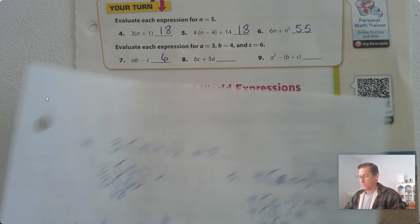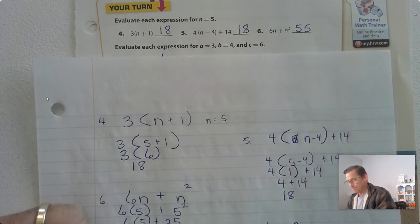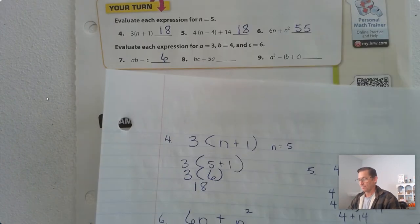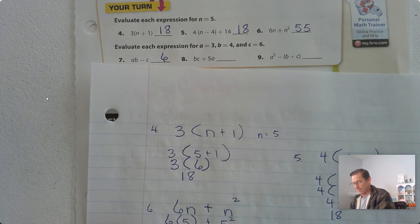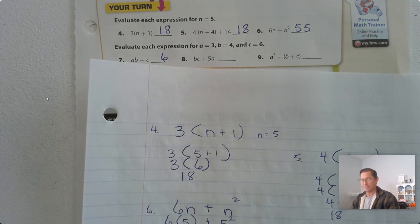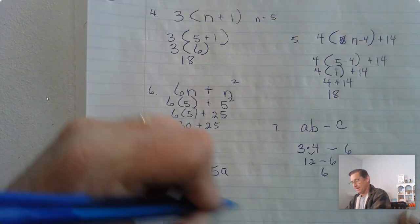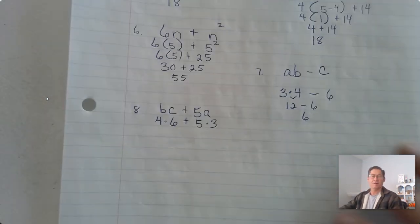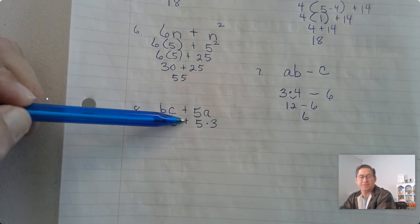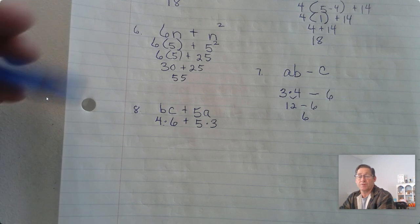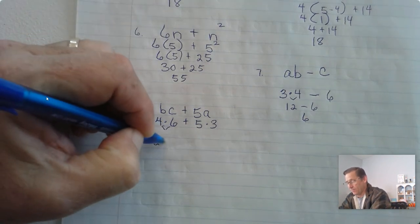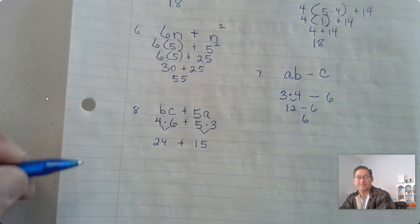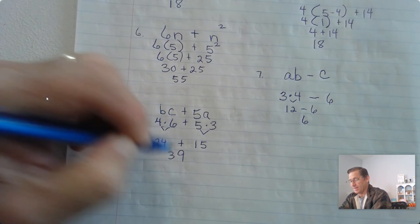Number 8: b times c plus 5 times a. Substitute 4 for b, 6 for c, plus 5 times a, and a is 3. So we have multiplication, addition, multiplication — need to multiply first. 6 times 4 is 24, plus 5 times 3. 5 times 3 is 15. Now we just add, and we get 39.